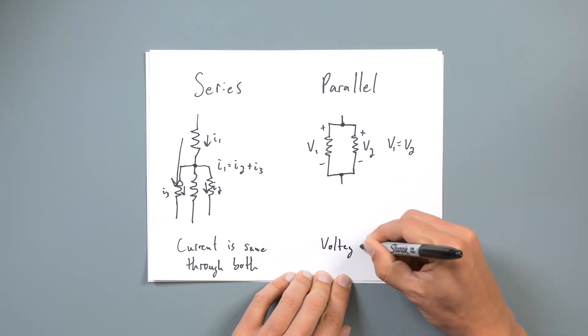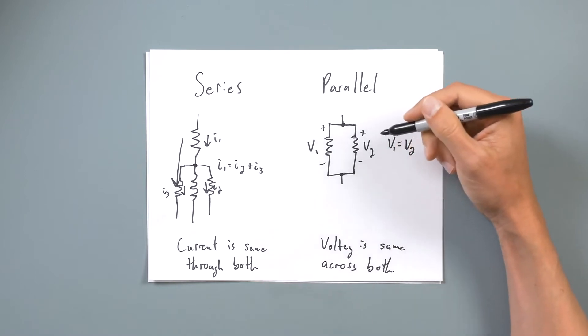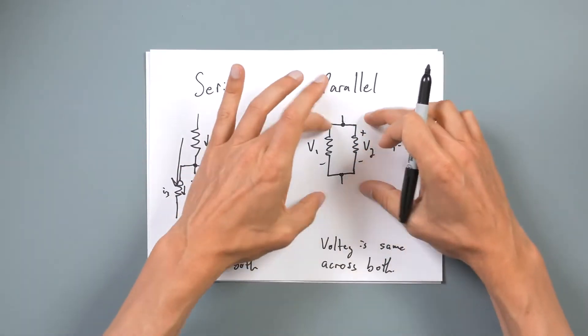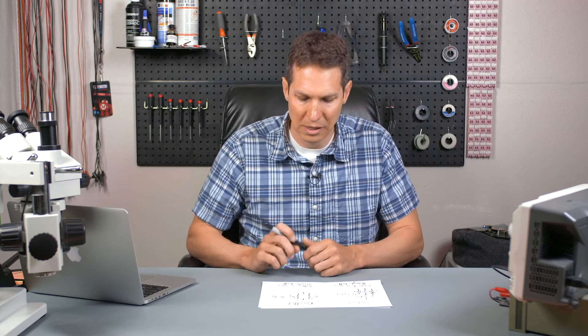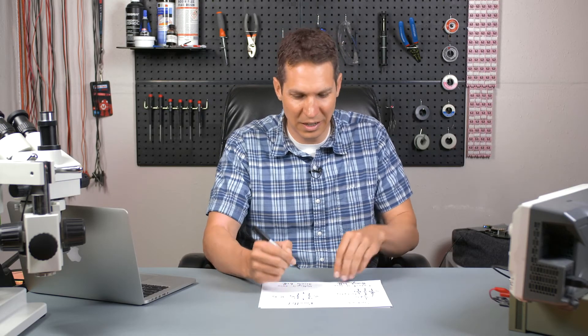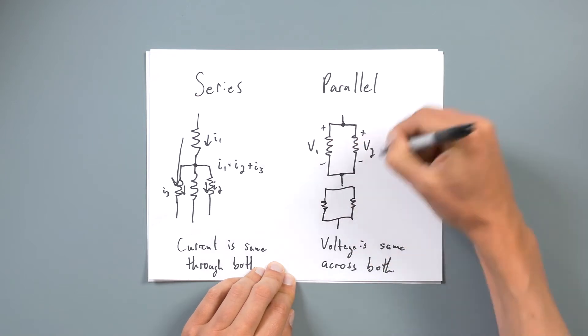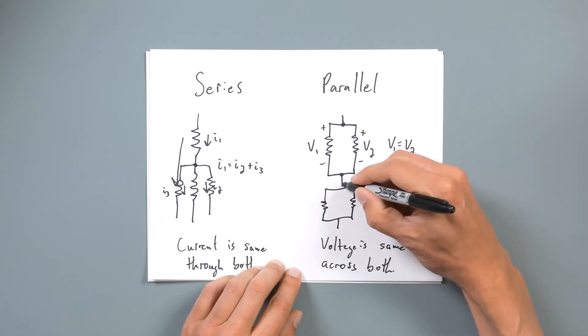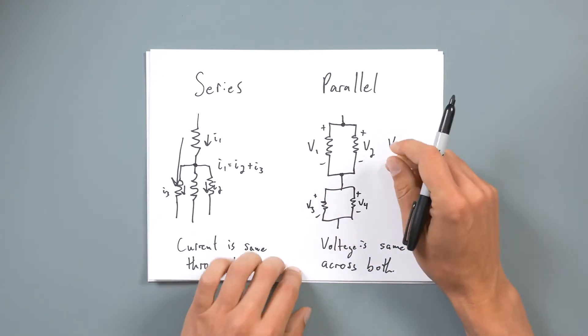The only thing with parallel is that you know they have the same voltage across them — voltage is the same across both. This is the easiest way to simplify our most basic circuits. If I know my voltage here and my voltage here, as long as I have the resistance, I can just say this is the same voltage, do some Ohm's law, and I'm done. These are super fundamental — you'll see them all the time. You can make things more complicated; for example, these two parallel sets of resistors can be in series with each other, and you can use that to simplify things.